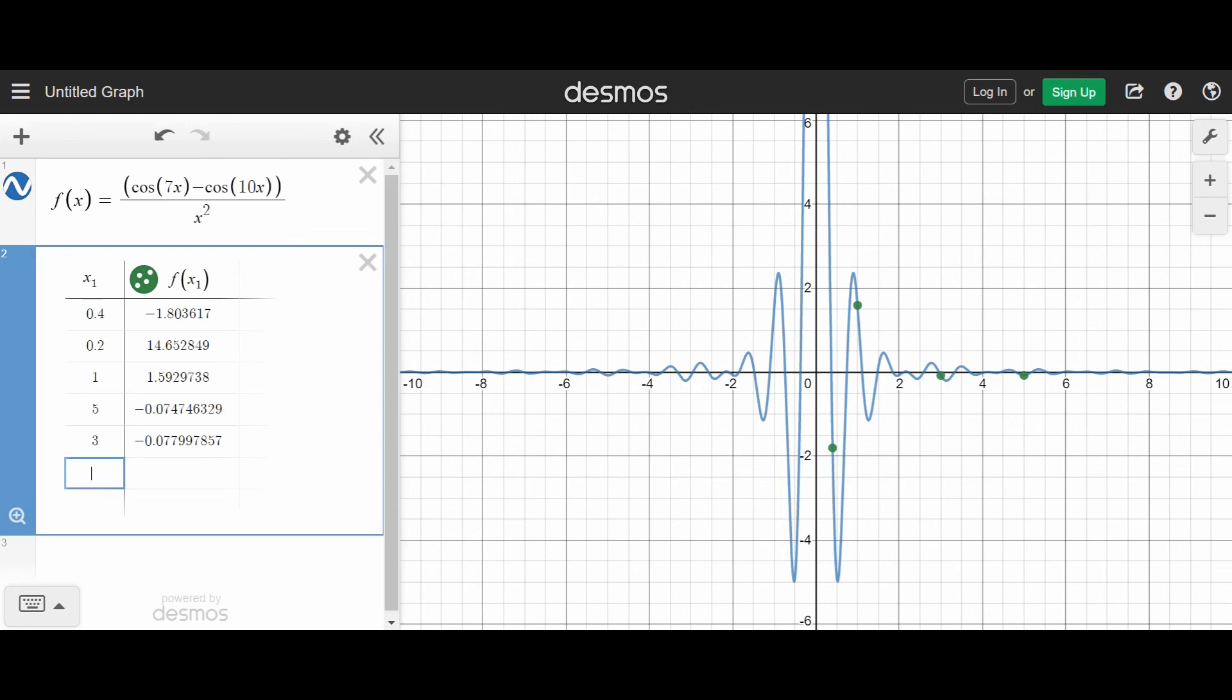And if I want to see what happens as I get closer and closer to a particular x value, let's say I want to see what happens as x gets closer and closer to 0. Then I can say 0.4, 0.2, I can say 0.1, 0.01, 0.00001.